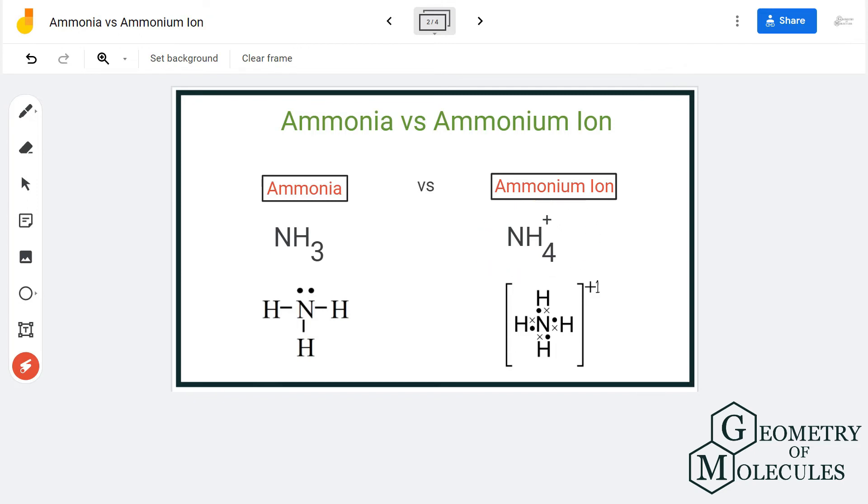Whereas when we come to NH4 plus, it has tetrahedral shape because a single central atom is bonding to four hydrogen atoms. We can also write the structures for both NH3 and NH4 plus like this.